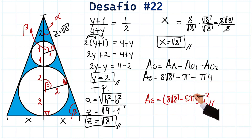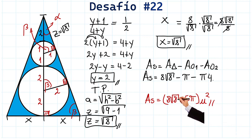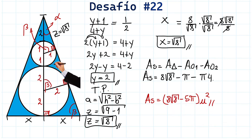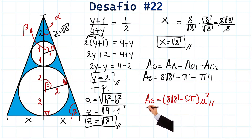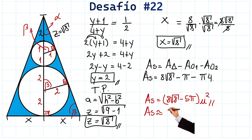Fascinating — we have already found the shaded area, meaning these little blue parts. The shaded area is approximately 6.9 square units. Spectacular! See you next time!